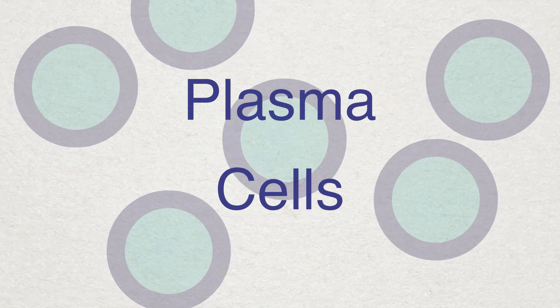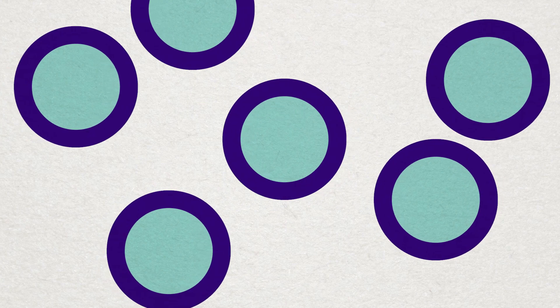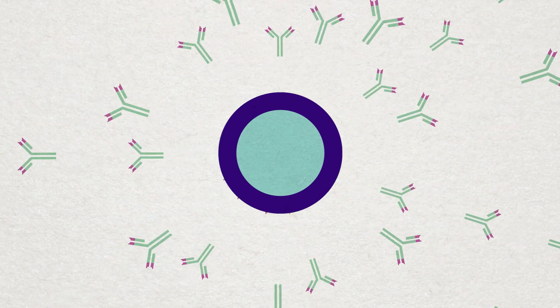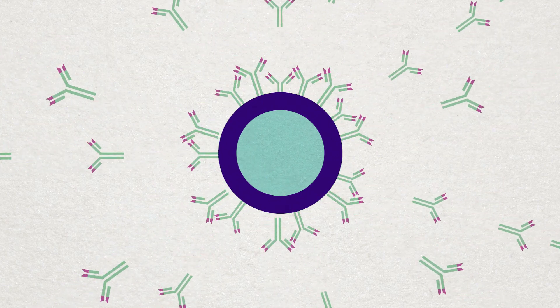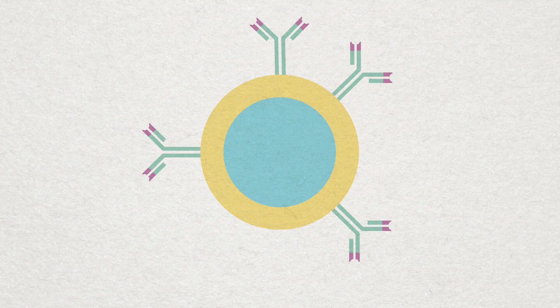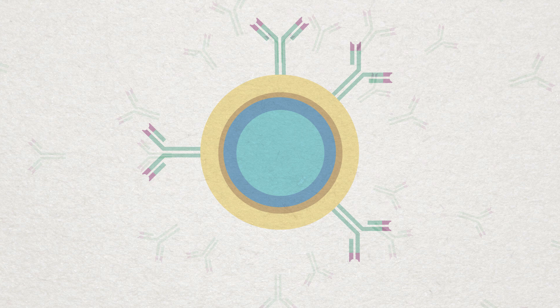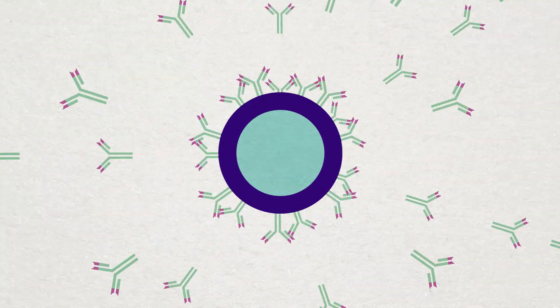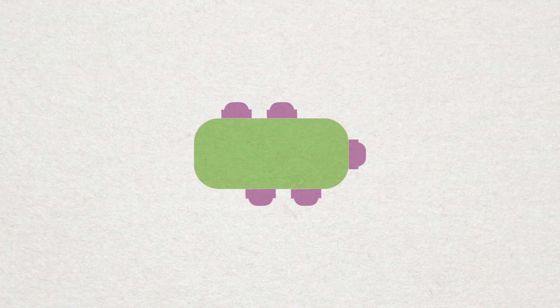The effector B-cells, which are called plasma cells, secrete millions of antibodies. These antibodies have exactly the same antigen-combining properties as the receptor molecules on the surface of the original B-cell. The antibodies will only combine with the antigen that originally activated the B-cell.